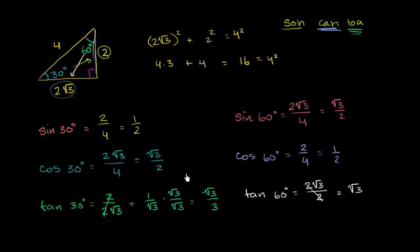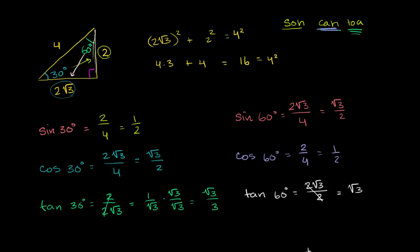Look how these are related: the sine of 30 degrees is the same thing as the cosine of 60 degrees, and the cosine of 30 degrees is the same thing as the sine of 60 degrees. And the tangents are inverses of each other. If you think about this triangle, it'll start to make sense why. We'll keep extending this and give you a lot more practice in the next few videos.